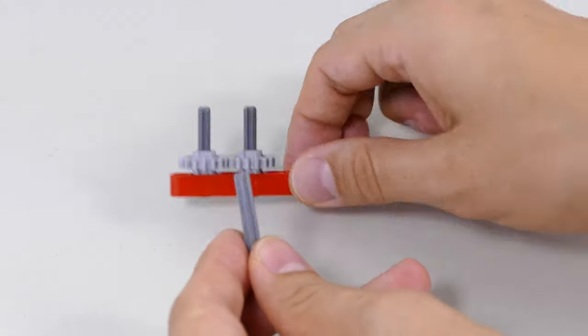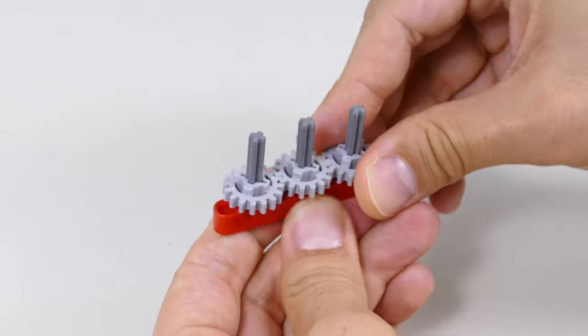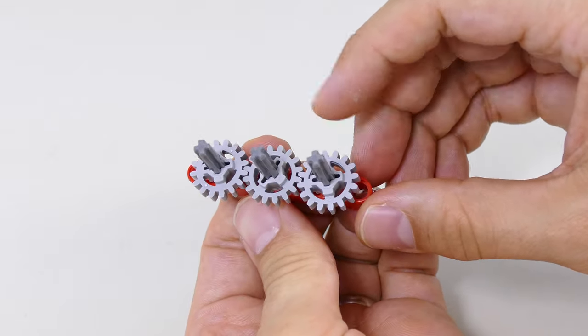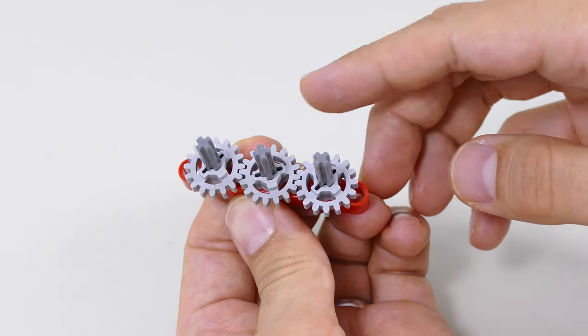As soon as you're getting to odd numbers of the gear wheels you can see that the first one and the third one are spinning in the same direction.